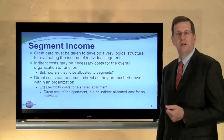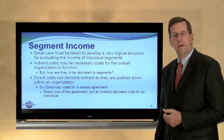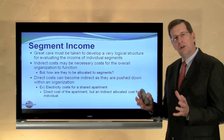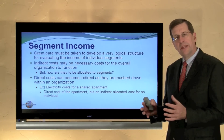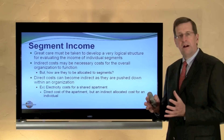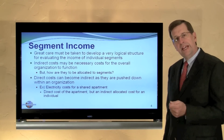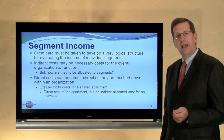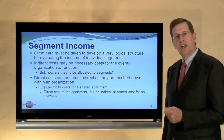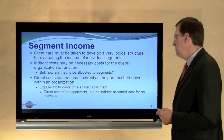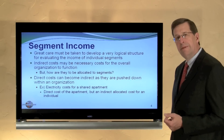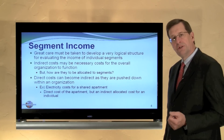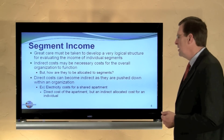For example, if you share an apartment with a roommate, the electricity consumed by that apartment is a direct cost for the apartment, but for each of you individually it becomes an indirect cost because you're sharing the electricity bill. The same issues arise in determining how costs are spread within an organization.